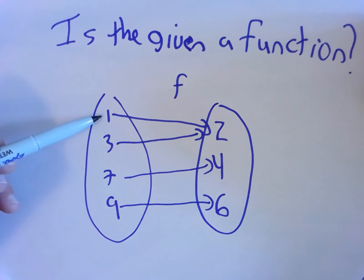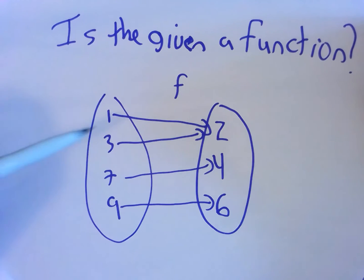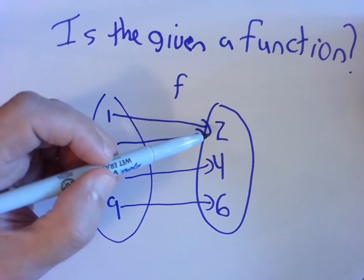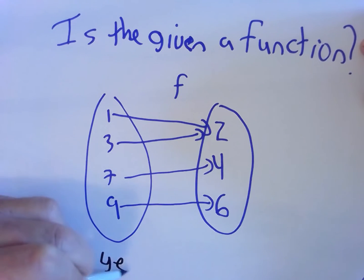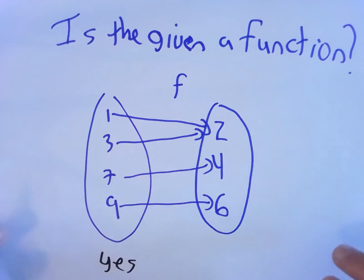Every input, the input 1, has an output of 2 every single time. The input 3 has exactly one output, happens to also be 2, don't care. Is f a function? Yes. f is a function.